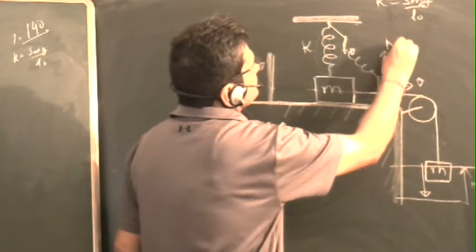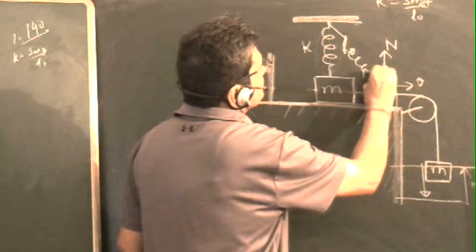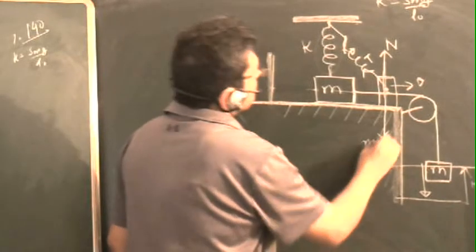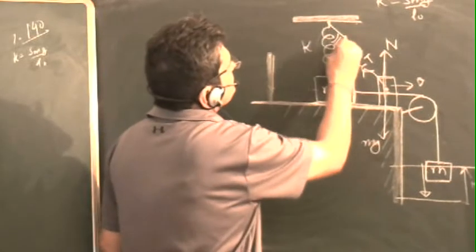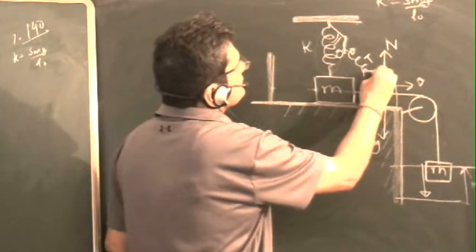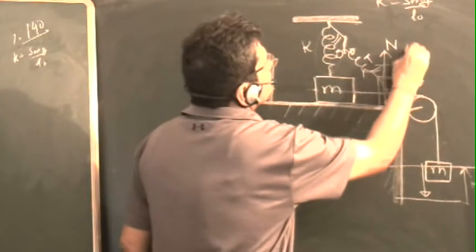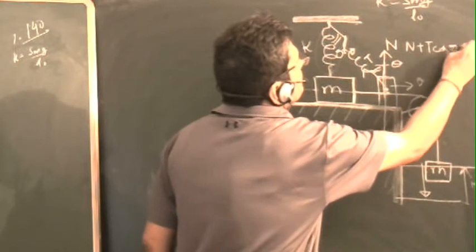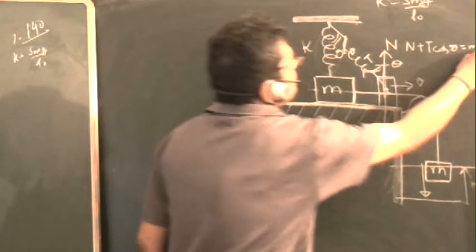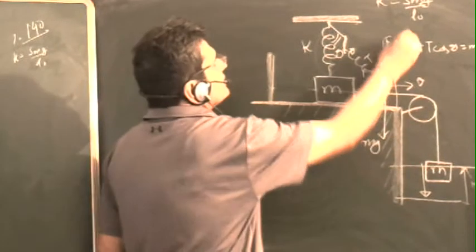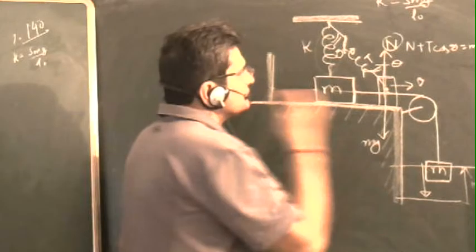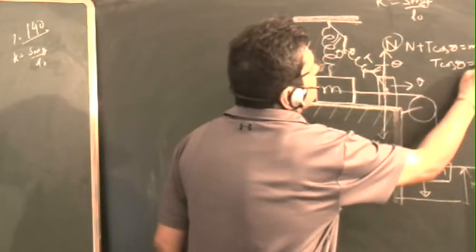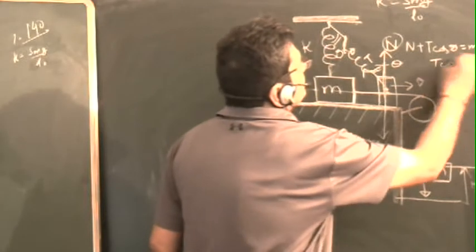If you take the forces, this is normal force, this is tension due to string, this is mg. Let this angle be theta, this will also be theta. So n plus T cos theta is equal to mg. When it is about to be lifted, n will be 0, so T cos theta is equal to mg. This is one relationship which we have got.